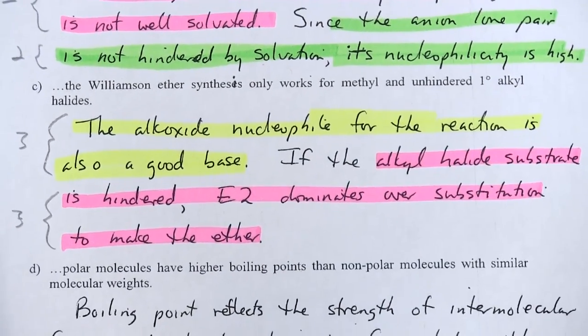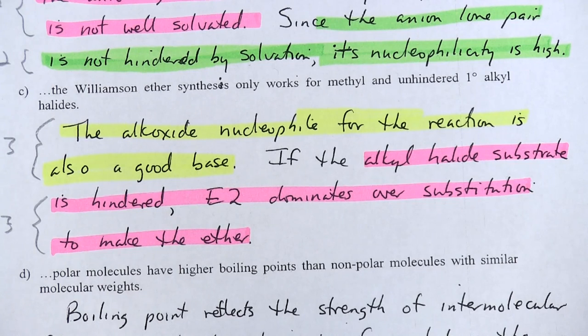And finally, segment three, asked you to explain why the Williamson ether synthesis only works for methyl and unhindered one degree alkyl halides. And the answer was, the alkoxide nucleophile for the reaction is also a good base. If the alkyl halide substrate is hindered, E2 dominates over substitution to make the ether. And you see there, three points was given to the yellow selection, and three points was given to the pink.